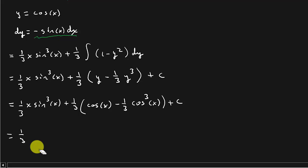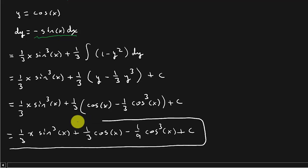And so that's going to give me 1 third x sine cubed x plus 1 third cosine x. I'm just distributing the 1 third. minus 1 ninth cosine cubed x plus c. And there's my answer.